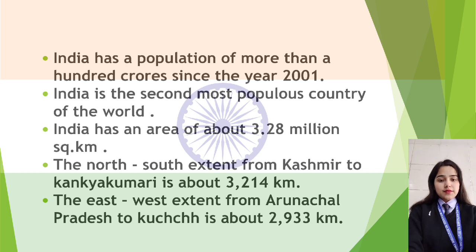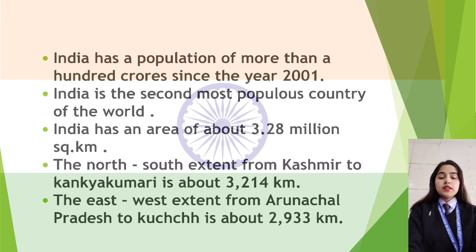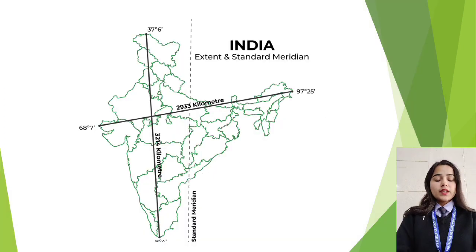Fifth and the last one is the east to west extent from Arunachal Pradesh to Kutch is about 2,933 kilometers.